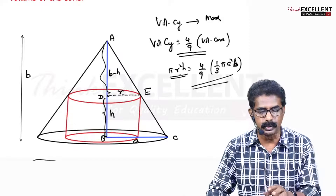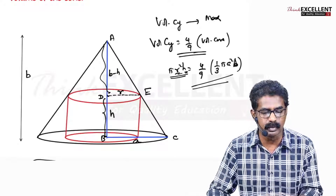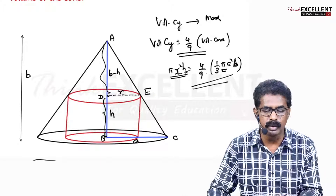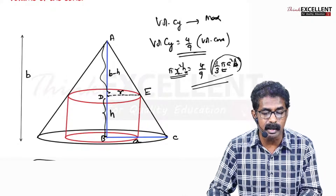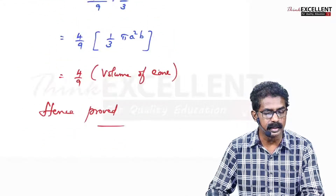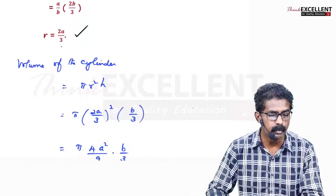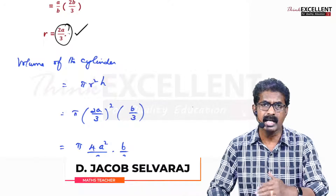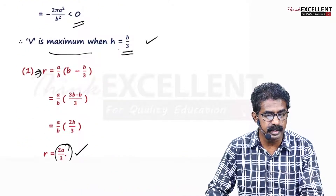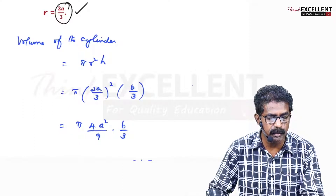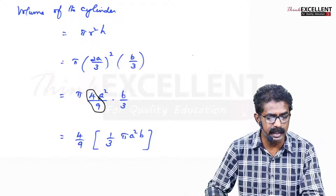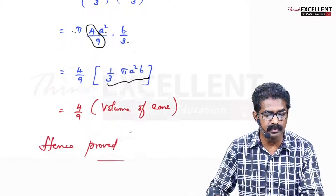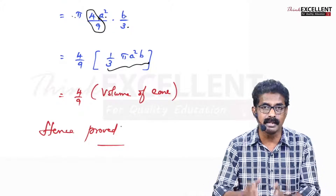Substitute R and H into the volume of the cylinder: V = π R² H = π · (2A/3)² · (B/3) = π · (4A²/9) · (B/3) = (4/9) · (1/3)π A² B. This is the same as (4/9) times the volume of the cone. That is exactly what we were asked to prove. Hope you understood — practice well, and we will continue in the next video.